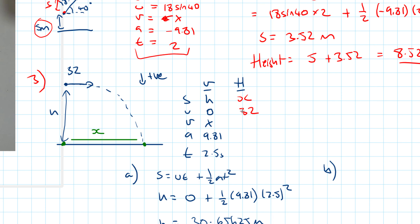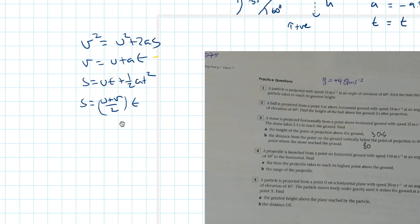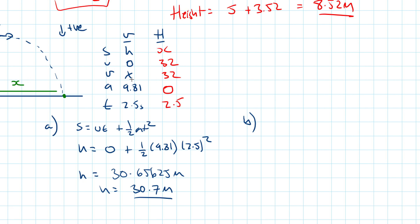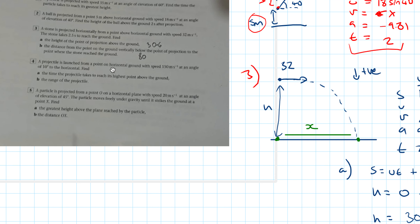In projectile questions there is always no horizontal acceleration, so acceleration equals zero. Since acceleration is zero, there is no change in velocity, so both u and v are 32. Acceleration a equals 0 and t equals 2.5. Using s equals ut plus half at squared: x equals 32 times 2.5 plus half times 0 times t squared, so x equals 32 times 2.5, which equals 80 metres.